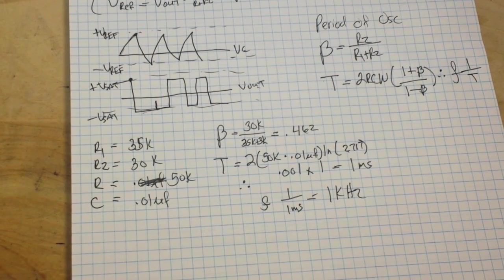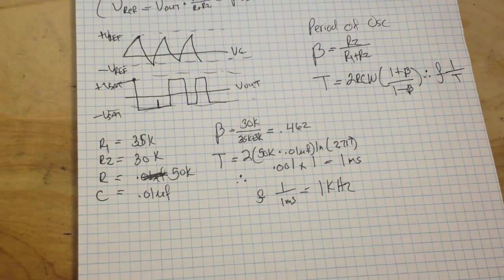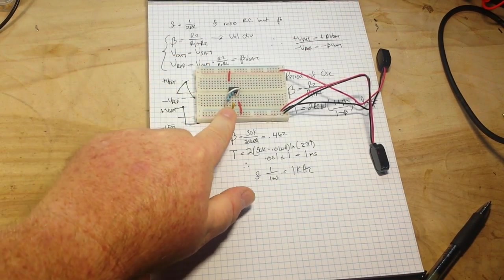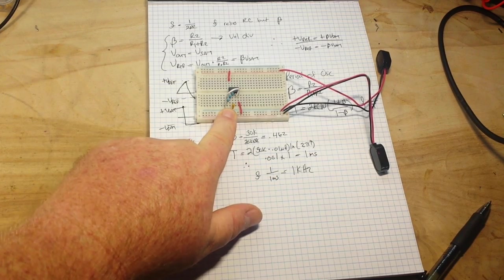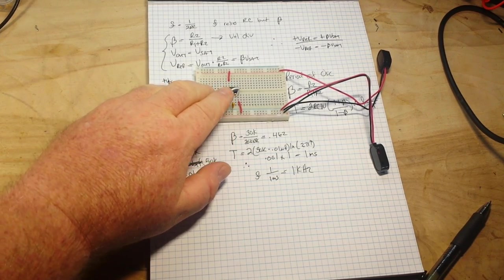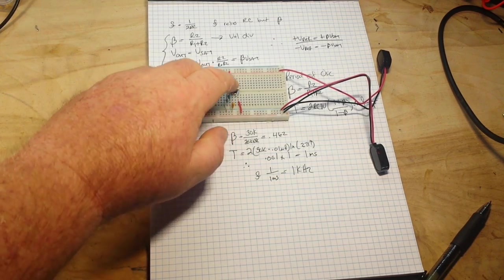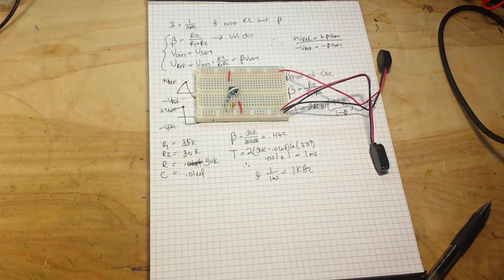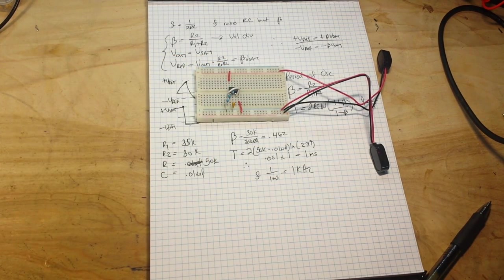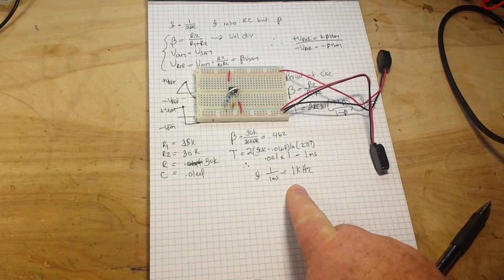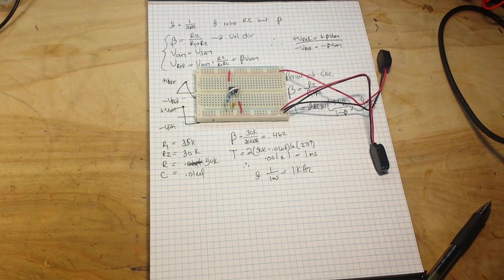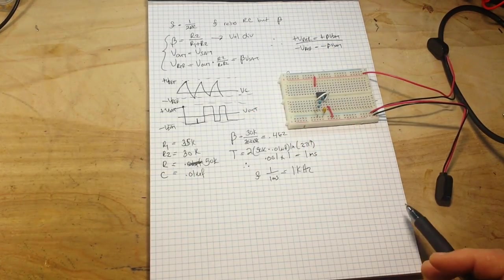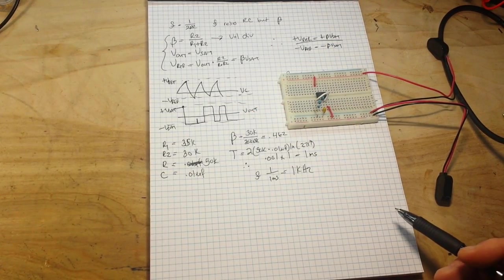So that's a lot of math. But that's why when we charge and discharge this capacitor through this voltage divider with this feedback resistor, we end up with a 1 kilohertz square wave, when we started out with the basic 1 kilohertz sawtooth wave.